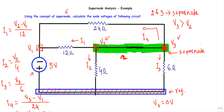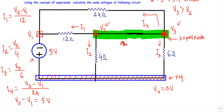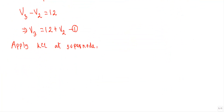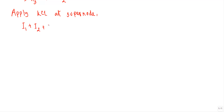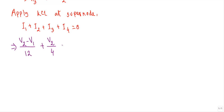Applying KCL at the super node: since I1, I2, I3, and I4 are all outgoing, their sum equals zero. So: (V2 - V1)/12 + V2/4 + V3/6 + (V3 - V1)/24 = 0.